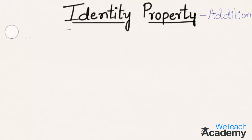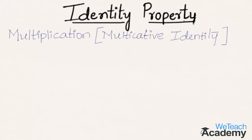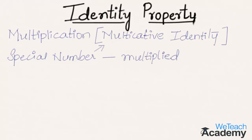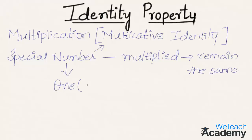Now let us discuss the identity property of multiplication, also called the multiplicative identity property. This property states that there exists a special number called the multiplicative identity which, when multiplied to any other number, that number will still keep its identity and remain the same. That special number is 1, which is the unique multiplicative identity, represented symbolically as a × 1 = a. So 1 is the multiplicative identity.